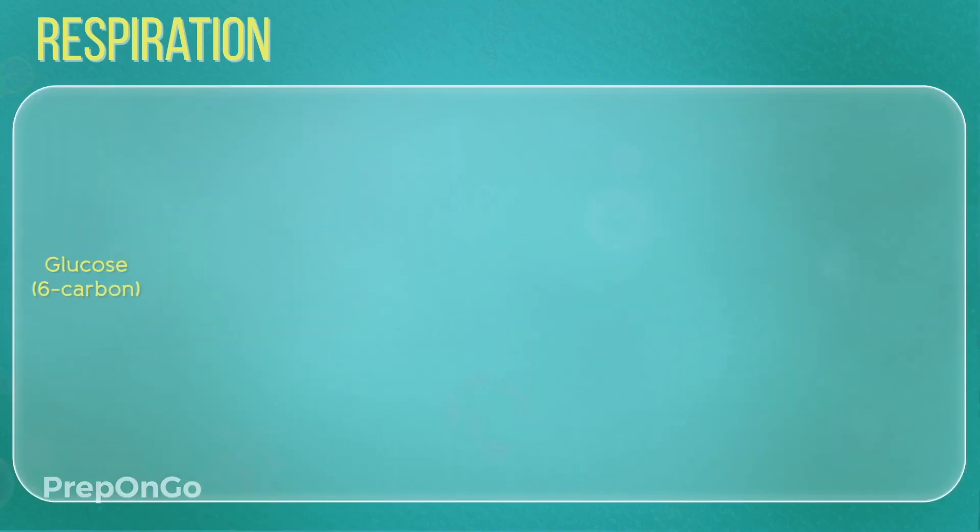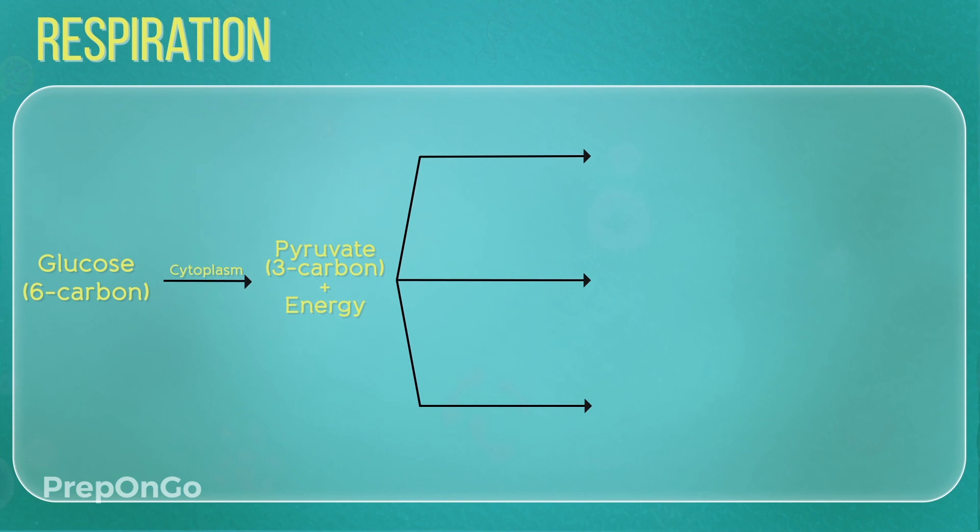Now whatever may be the case, the first step remains the same, which is breaking down of six carbon molecule glucose into a three carbon molecule pyruvate. There is also a release of energy during this breaking down. Now the second step depends upon the fact whether oxygen is available or not. Let's see the various cases involved.